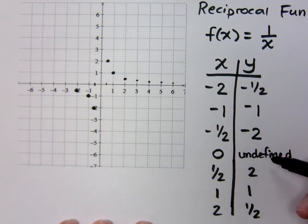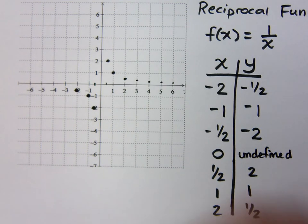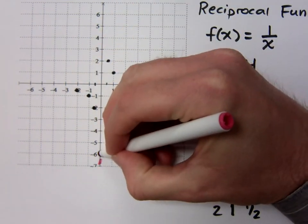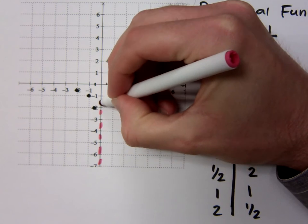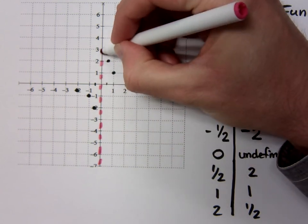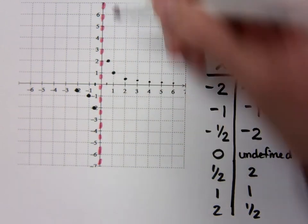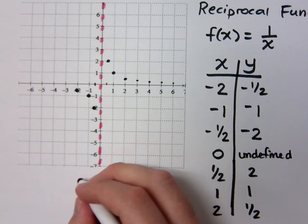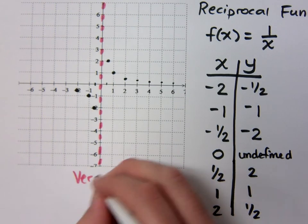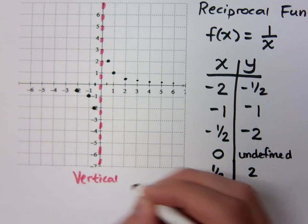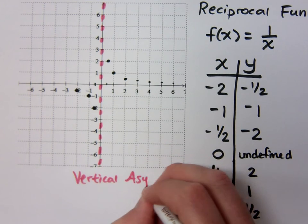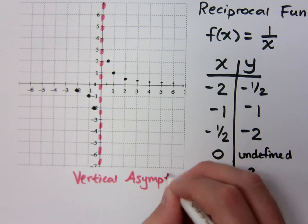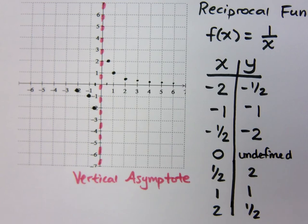Now, we said here that when x equals 0, we are undefined. Now, what that means to us is something called a vertical asymptote. So there is this imaginary line right here that you cannot cross. This is what we call a vertical asymptote. It's a vertical asymptote. You cannot cross that guy.